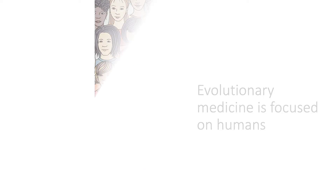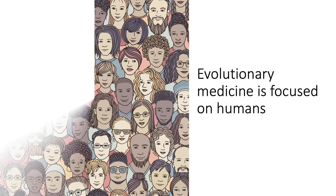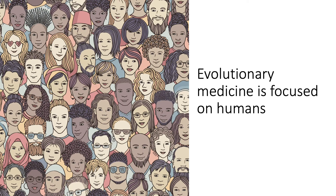Number 2: Evolutionary medicine is focused on humans. Evolutionary processes have shaped who we are as a species and continue to do so every waking moment. Evolutionary medicine helps us learn about the relevance of biological evolution in the human species by focusing on research questions that involve human health.